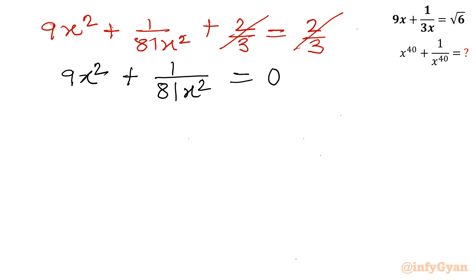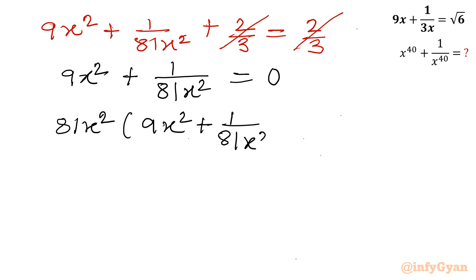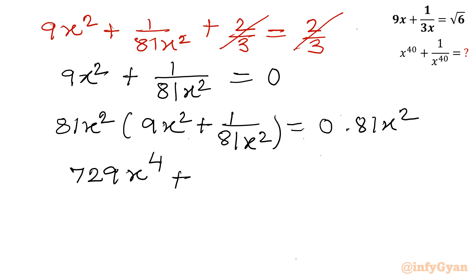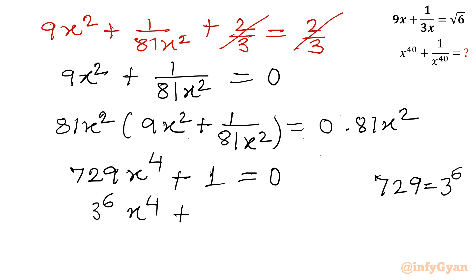Now I will multiply this equation by 81x squared — so let's multiply both sides by 81x squared. That gives us 9 times 81 x to the power 4, which is 729x to the power 4, plus 1, equal to 0 on the right hand side. Now 729 equals 3 power 6 — since 81 times 9 equals 729 — so we can write: 3 power 6 times x power 4 plus 1 equal to 0.